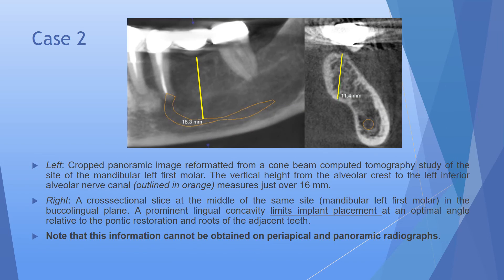Case 2 is a mandibular implant. A cropped panoramic image from CBCT studies the mandibular left first molar region. The vertical height from the alveolar crest to the inferior alveolar nerve canal — outlined in orange, with the measurement line in yellow — measures just over 16 mm. However, a cross-sectional image of the same site in the buccolingual plane reveals a prominent lingual concavity. This concavity limits implant placement at an optimal angle relative to the prosthetic restoration and roots of adjacent teeth — something impossible to detect on two-dimensional imaging, making CBCT a must for such cases.